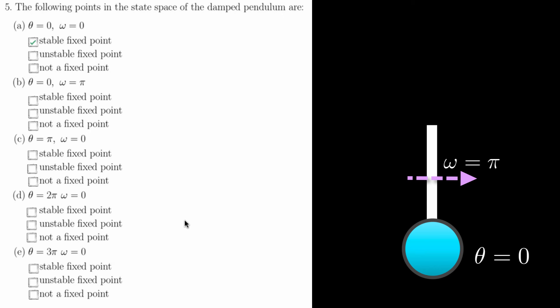Even though the pendulum is in this bottom position, at the next time step, the pendulum will continue to move, and so f of x star will not be x star. So this is not a fixed point.